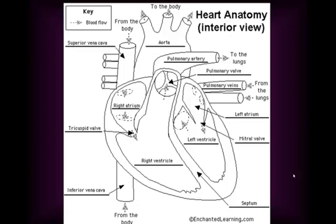Continuing: back from the lungs by way of the pulmonary veins, into the left atrium, through the mitral valve, into the left ventricle, through the aortic valve, and into the aorta and to the body.